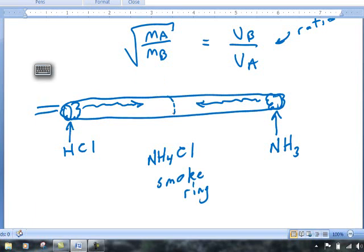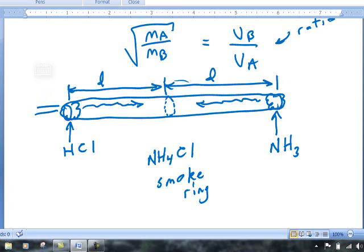When the smoke ring forms, what we're going to do is stop our stopwatches. We started the stopwatches when we inserted the cotton wads. Now, when we stop the stopwatch at the site of the smoke ring, we have data that will give us a distance to the smoke ring from the cotton wad and also a distance to the smoke ring from the cotton wad for the ammonia, and we have a time value. With the combination of distance and time, we can take the distance, divide by the time, and that will give us the velocity.